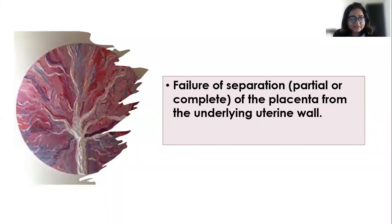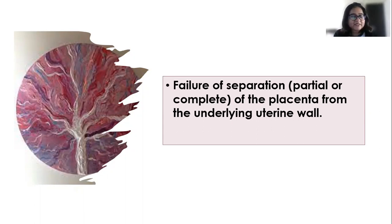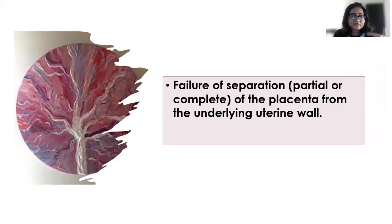Whenever there's a uterine scar with placenta previa, there is a significant risk for placenta accreta syndromes. Remember: a previous scar on the uterus with a low-lying placenta — and the most common scar on the uterus is obviously a cesarean section. So previous cesarean section with a placenta previa is the most common and most significant risk factor for developing placenta accreta syndromes.